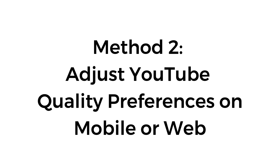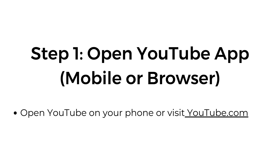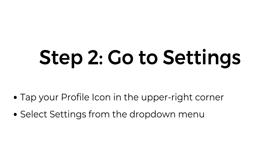Method two: adjust YouTube quality preferences on mobile or web. Step one — open the YouTube app on mobile or browser. Open YouTube on your phone or visit youtube.com.